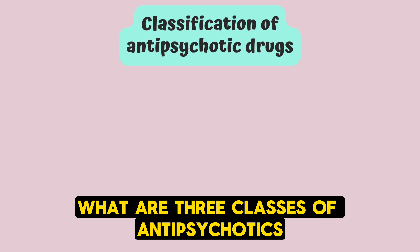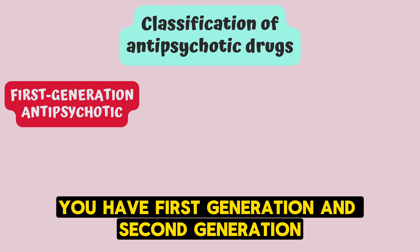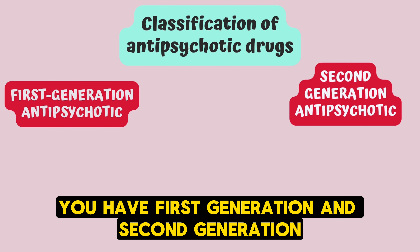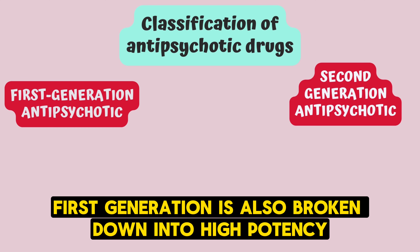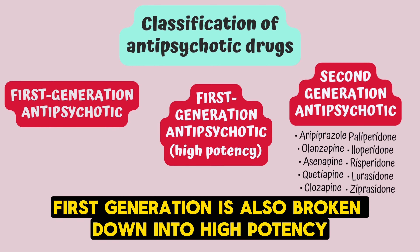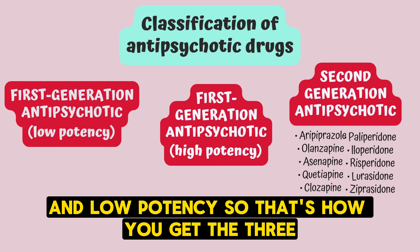What are the three classes of antipsychotics? You have first-generation and second-generation, but first-generation is also broken down into high-potency and low-potency. So that's how you get the three.